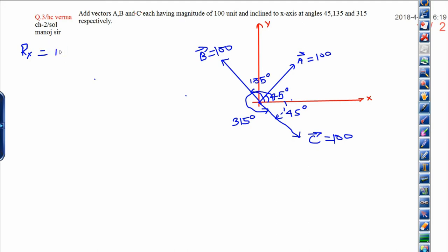I can write here along the x-axis 100 into cos 45 degrees. This is the x-axis component of the first vector A. Plus, all have the same magnitude, that is why you can write 100 cos 135 degrees plus 100 cos 315 degrees.